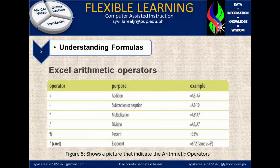Figure 5 shows a picture that indicates the arithmetic operators. There are three columns: the operator, the purpose, and the example. The first operator is a cross sign, which is called addition. The example is equals A5 plus A7, so the A5 cell must be added by A7 to get the total.